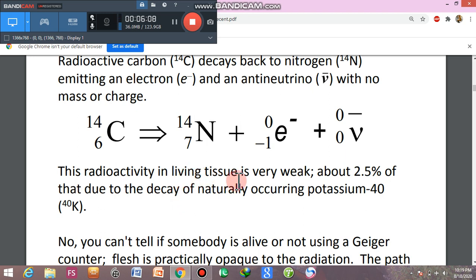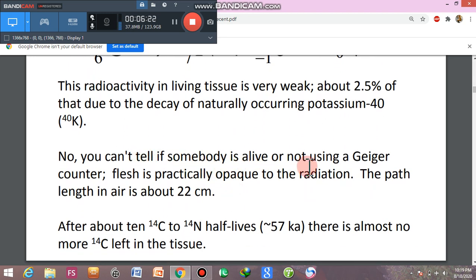This radioactivity in living tissue is very weak. Living tissue radioactivity is about 2.5% of that due to the decay of naturally occurring potassium-40. Now you can't tell if somebody is alive or not using a Geiger counter. Flesh is practically opaque to the radiation. The path length in air is about 22 cm.